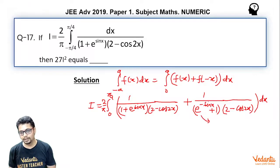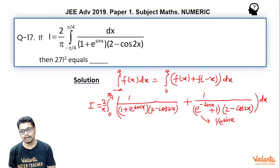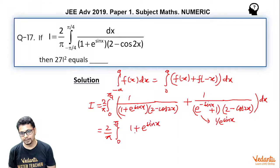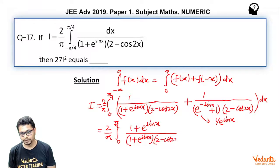We write e^(−sin x) as 1/e^(sin x). Taking the LCM, f(−x) simplifies to e^(sin x)/(1 + e^(sin x)). So the full expression inside the integral becomes (1 + e^(sin x)) divided by (1 + e^(sin x)), all over (2 − cos 2x), giving I = 2/π ∫₀^(π/4) (1 + e^(sin x))/[(1 + e^(sin x))(2 − cos 2x)] dx.